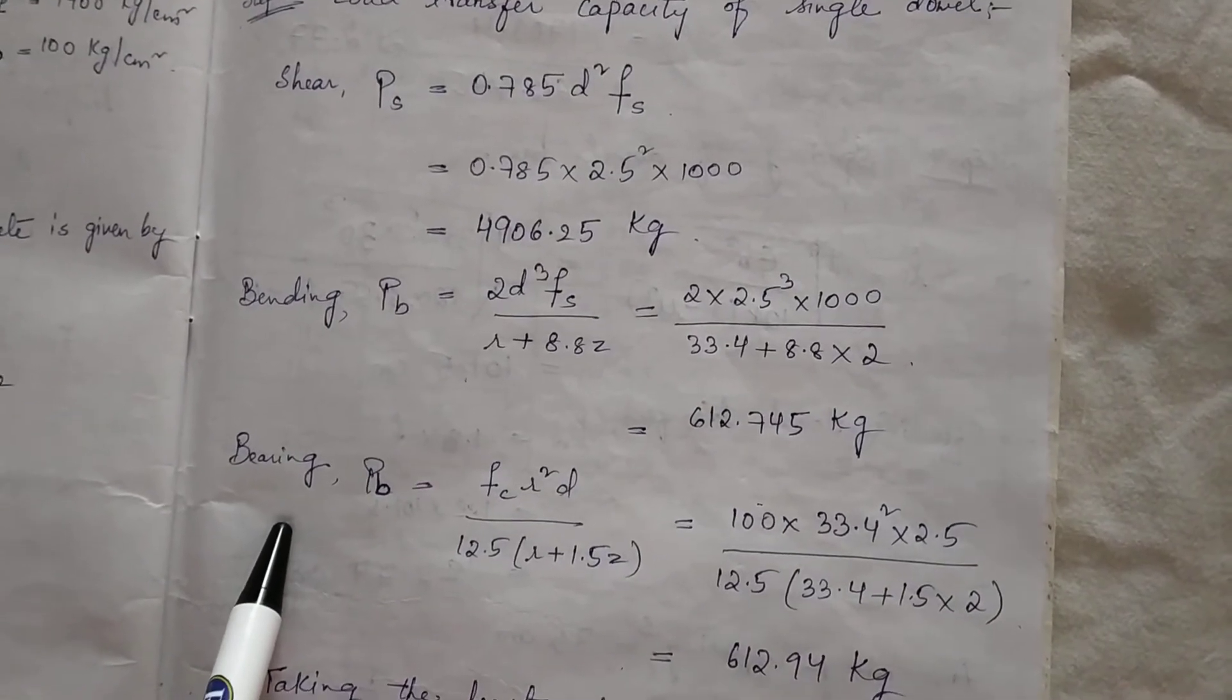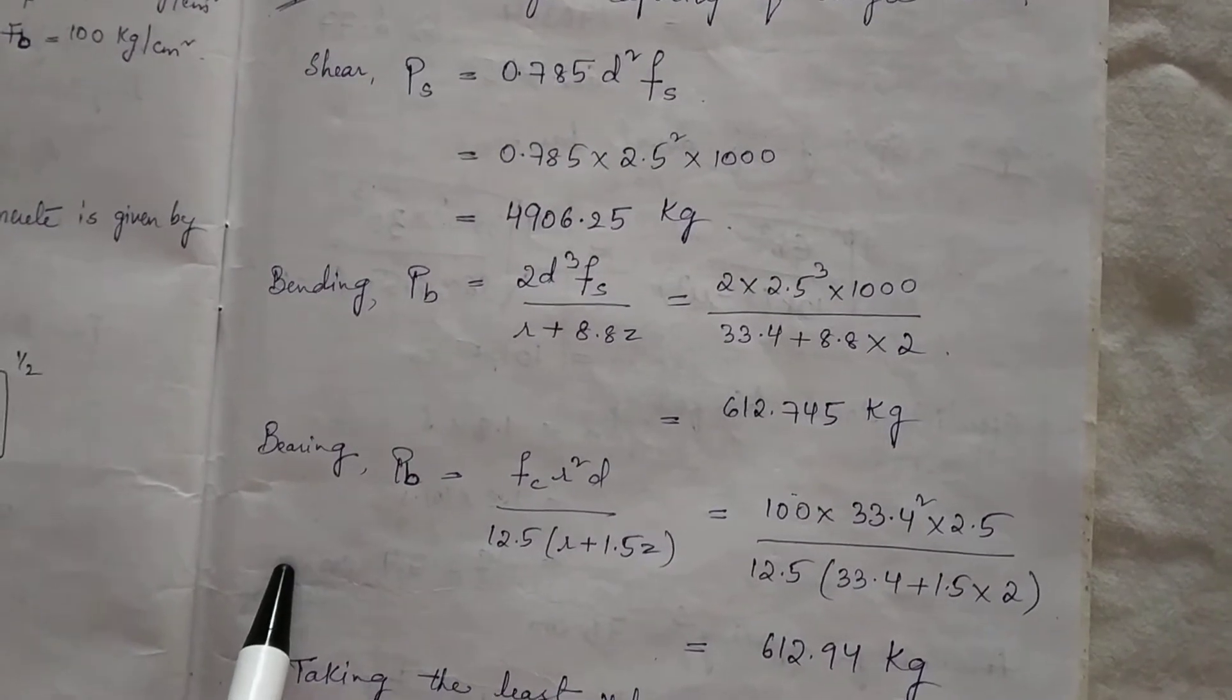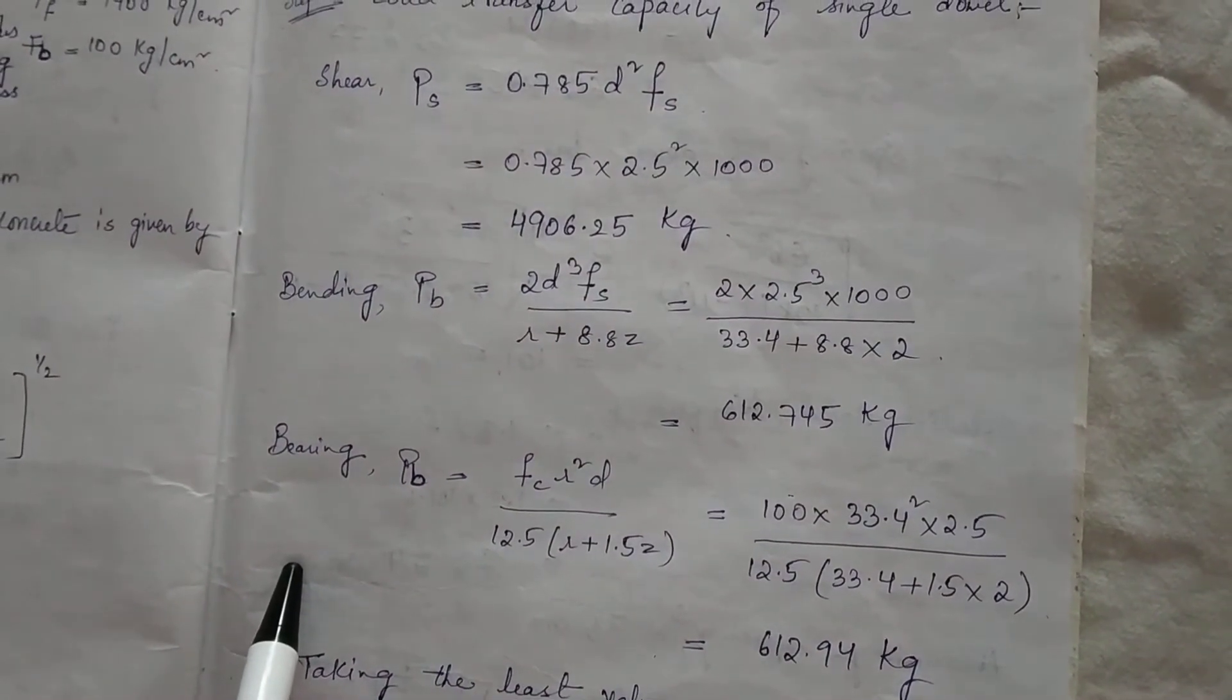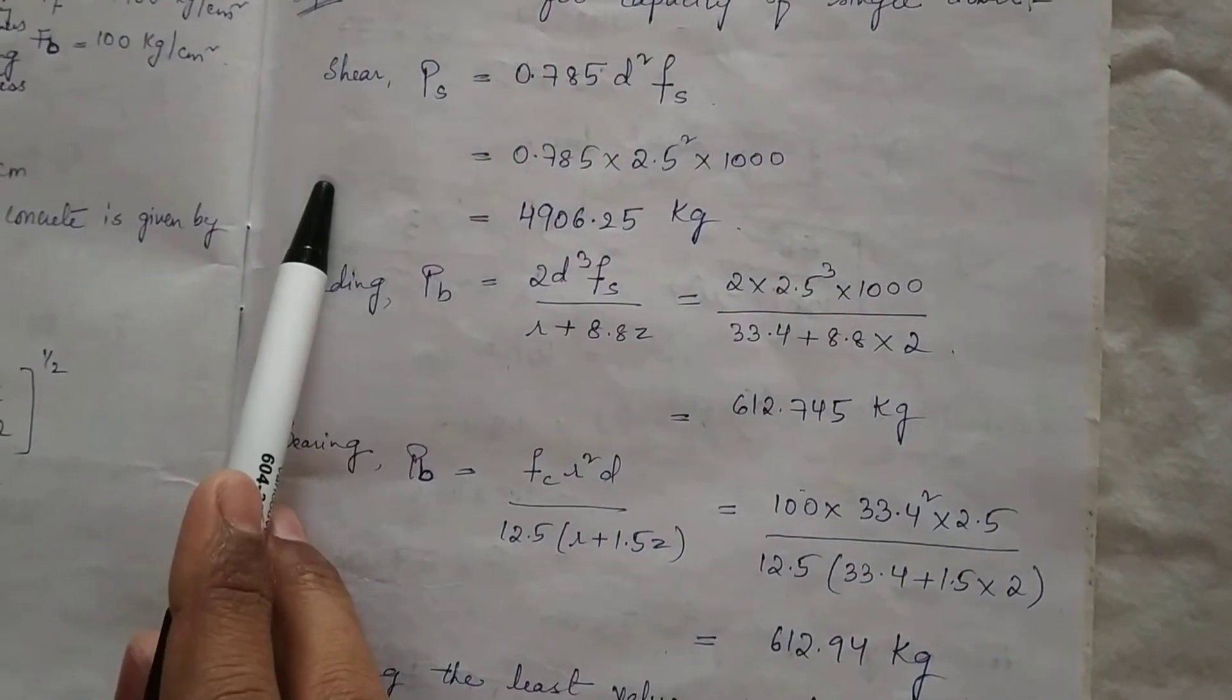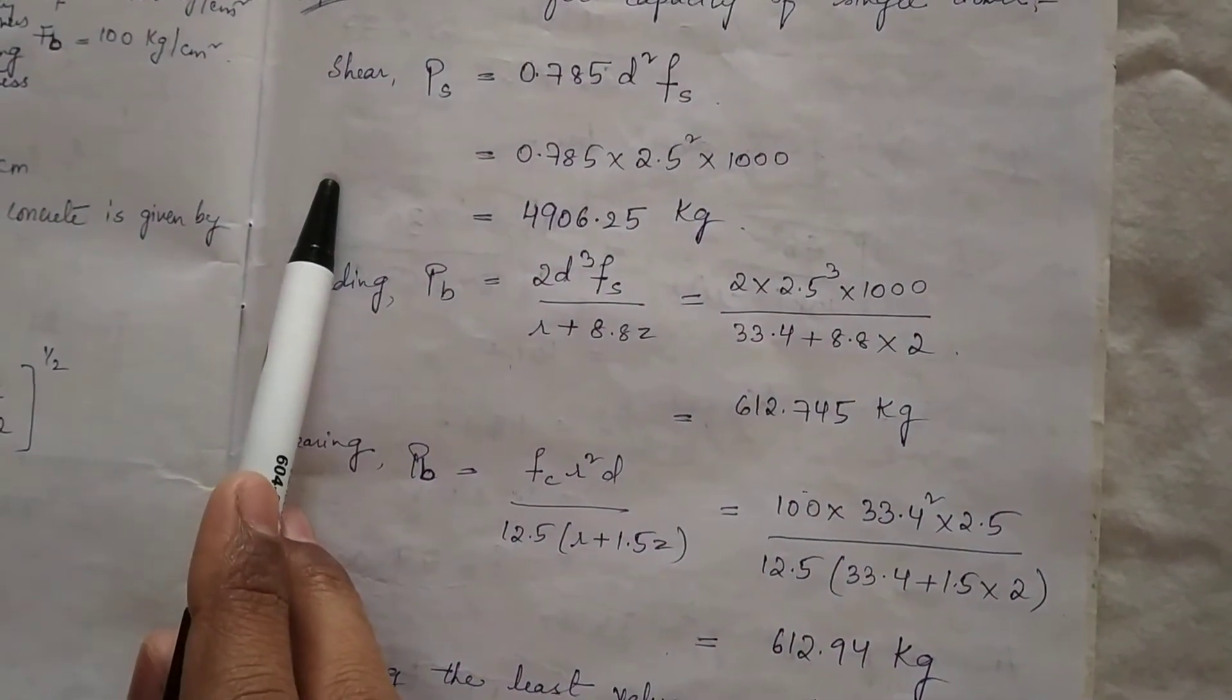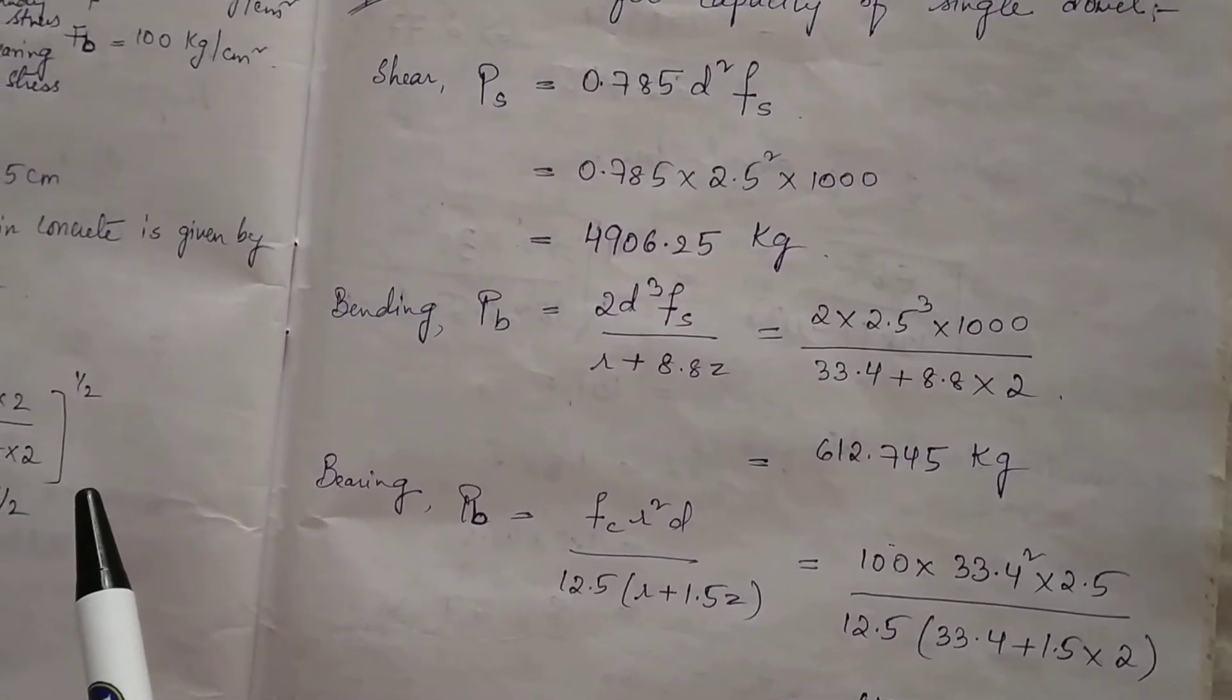After calculating the load for shear, bending, and bearing, as per IRC 58:2002, it states that it is observed that the bearing stress in concrete is responsible for the performance of the joints for the dowel bar.